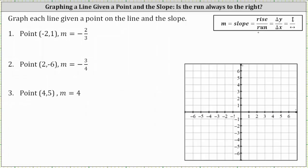Let's first take a look at a typical example. We're asked to graph each line given a point on the line and the slope. For number one, the point is negative two comma one. To plot the point, we move left two units and then up one unit. We're given the slope is equal to negative two thirds, which we write as negative two over positive three, where the negative two represents the rise or change of y, and the positive three indicates the run or change in x.